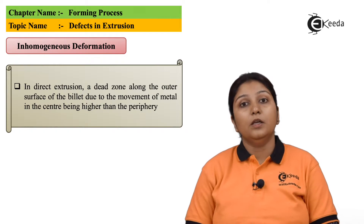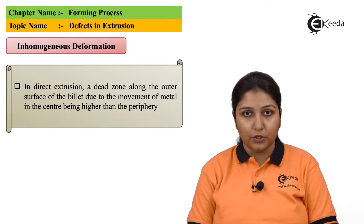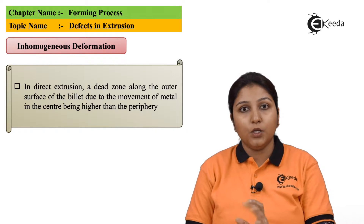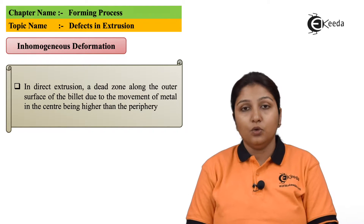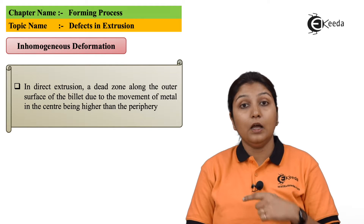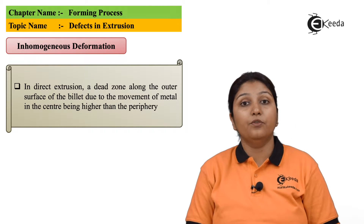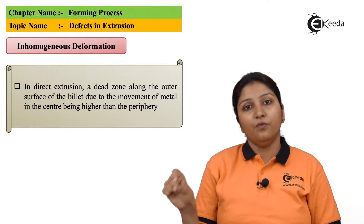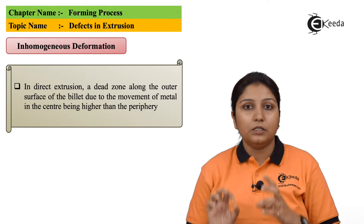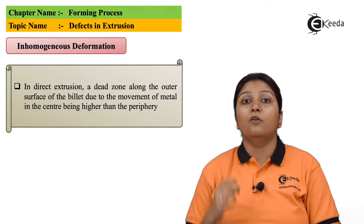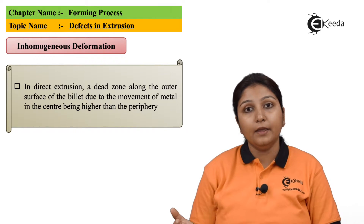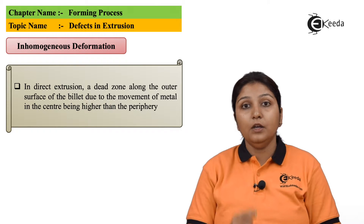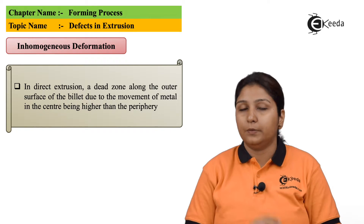This is inhomogeneous deformation. You have a billet in your extrusion process. There is a certain kind of defect at the outer surface of your billet — because your billet is moving and your cylinder is stationary. Due to the motion of the billet being higher than the outer periphery, that is your cylinder, inhomogeneous deformation takes place.